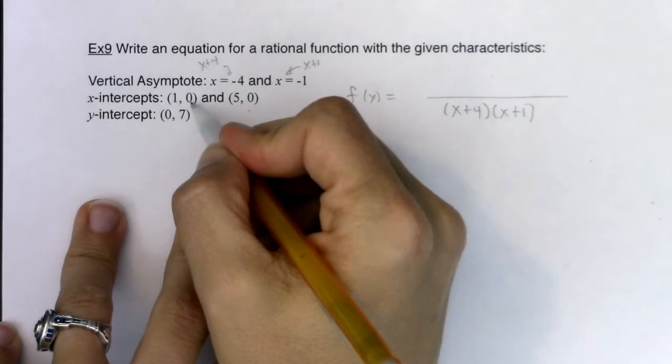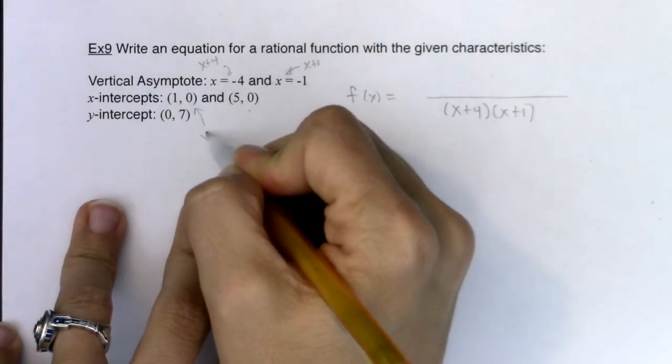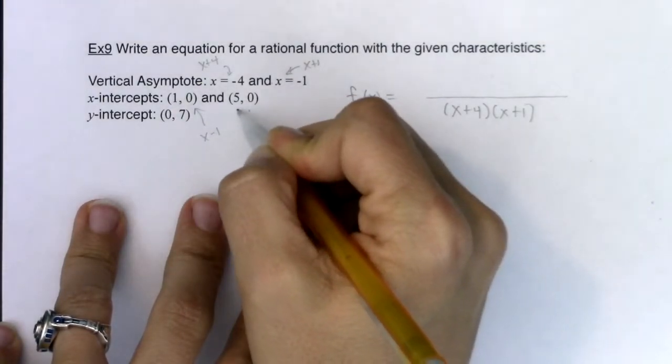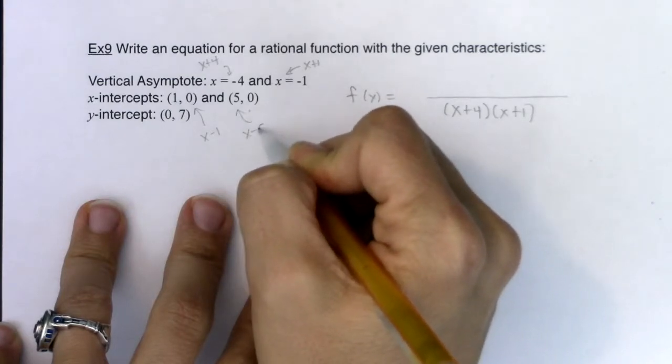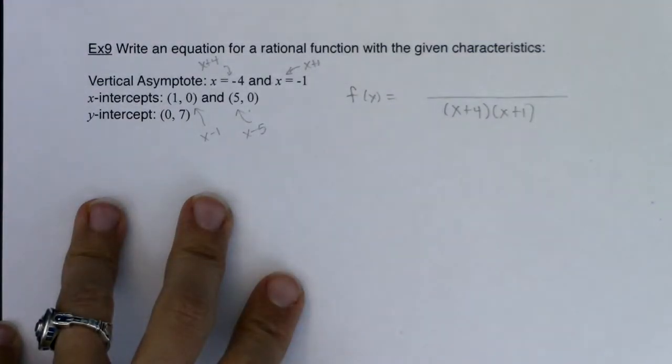Now x-intercepts. If I've got one at 1 and 5 respectively, this has to be associated with the factor x minus 1, and this has to be associated with the factor of x minus 5.